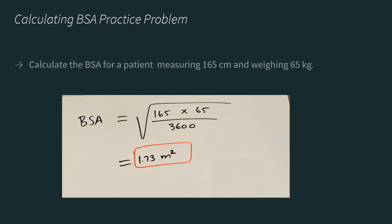Let's apply what we just learned. Let's calculate the BSA for a patient measuring 165 centimeters and weighing 65 kilograms. Using the formula, it'll be the square root of the height, 165 centimeters, times the weight, 65 kilograms, divided by 3,600. And that's how you find the BSA in meter square.